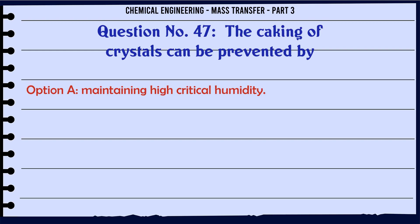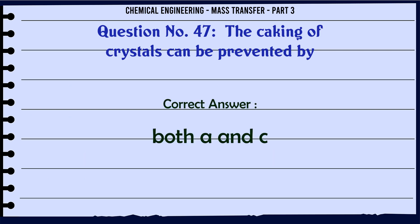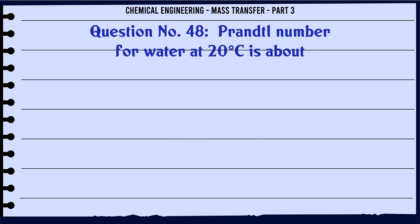The caking of crystals can be prevented by: A) maintaining high critical humidity, B) maintaining low critical humidity, C) coating the product with inert material, D) both A and C. The correct answer is: both A and C.